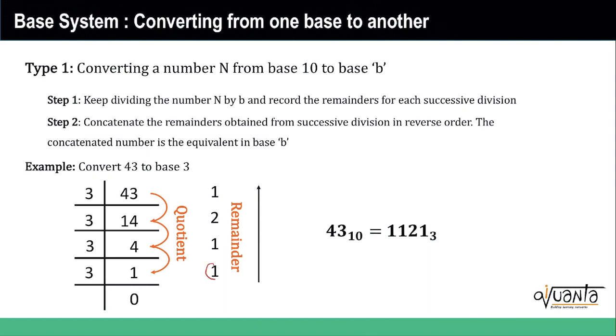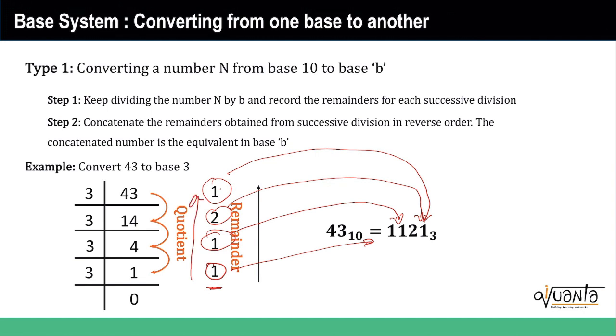How we do this 1121: we have concatenated from the last all the way up to the first one, which is what I meant by concatenating in reverse order. And we get 1121 as the number in base 3, which is equivalent to 43 in base 10.